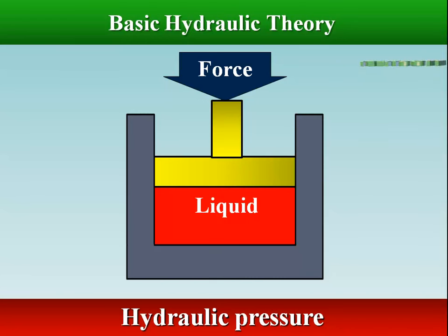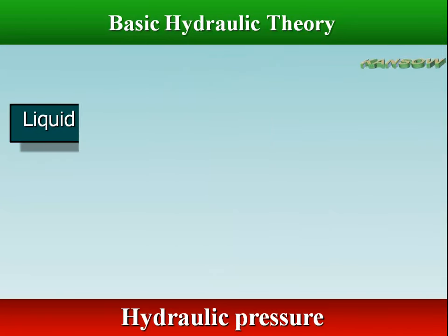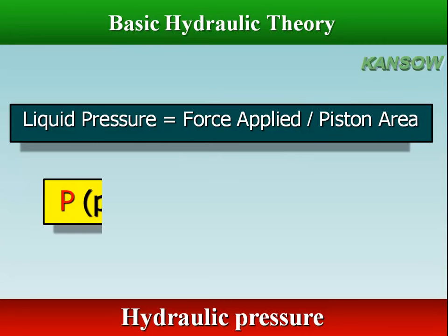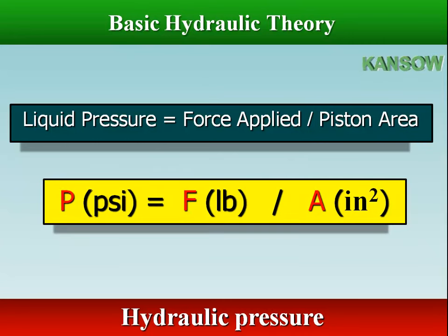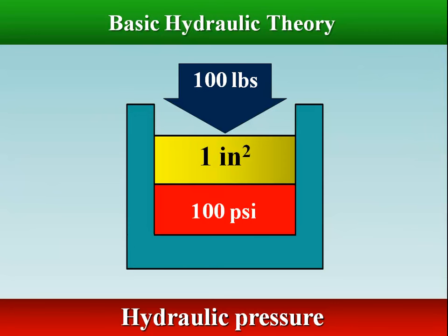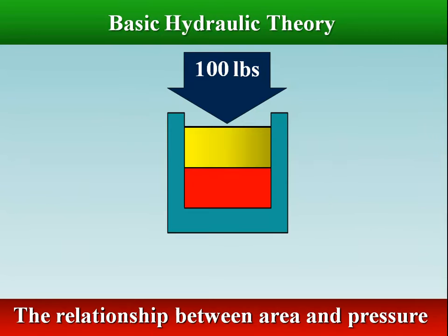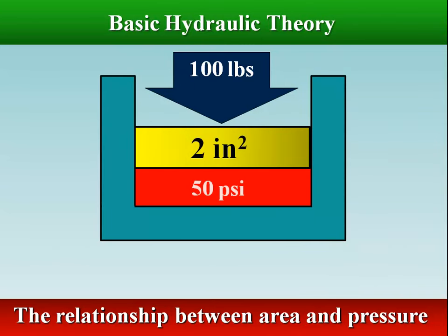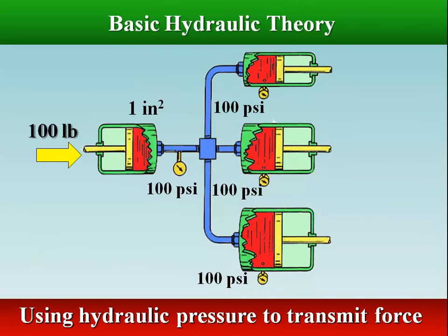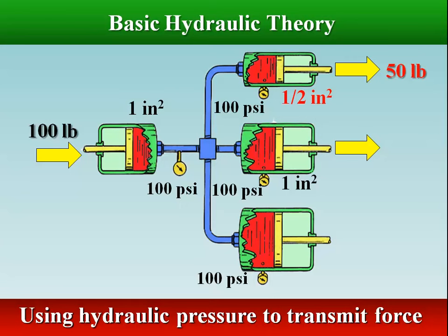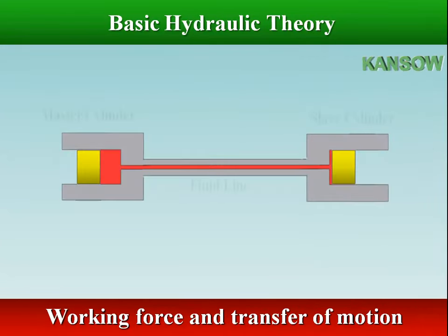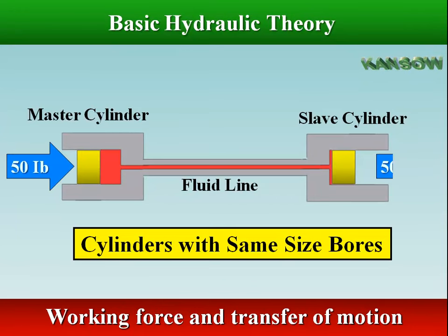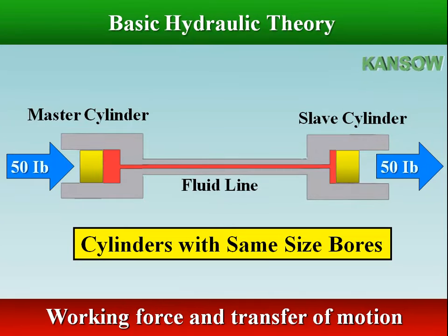Hydraulic pressure represents the force applied to the liquid. Fluid pressure is determined by dividing the input force applied to a piston by the area of the piston. The same pressure applied over different areas can produce different forces, larger and smaller. With cylinders of the same size, when force is applied to the master piston, the slave piston will move the same amount with the same force.